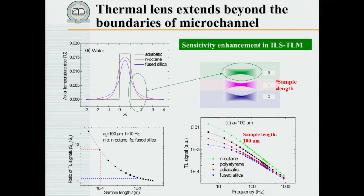Here our sample generates a thermal lens, and we have additional thermal lenses in front and at the rear of the sample. Using appropriate materials with high change in index of refraction with temperature and low thermal conductivity, we can generate thermal lenses comparable to that of the sample. Here are some examples for different materials: octane as a representative of organic solvents, which have extremely high enhancement factors, showing considerably increased signal compared to the adiabatic case. Polystyrene is somewhere in between.